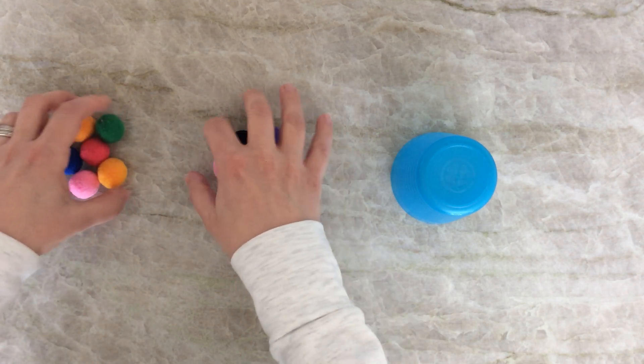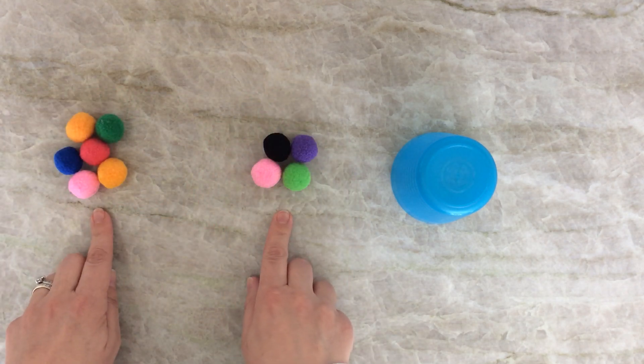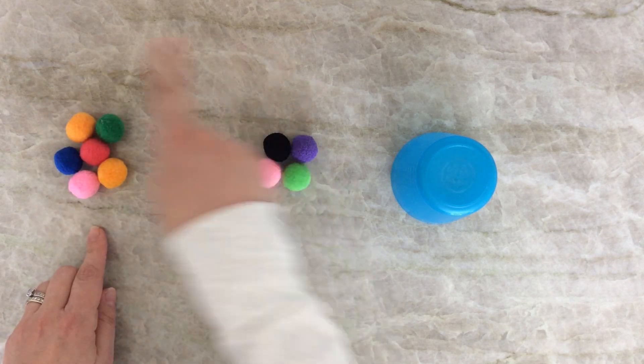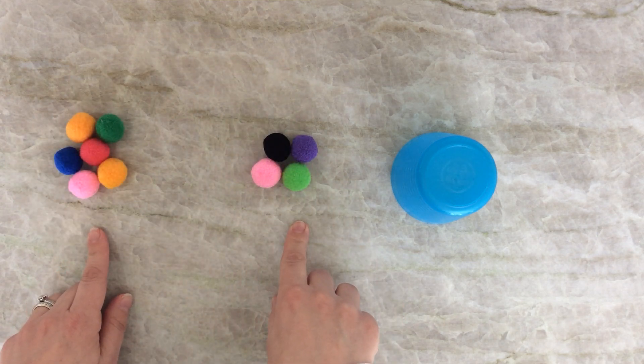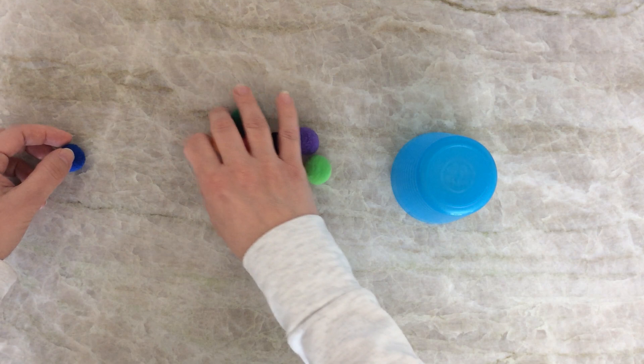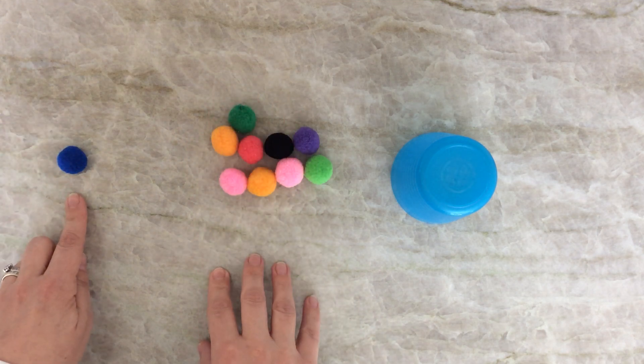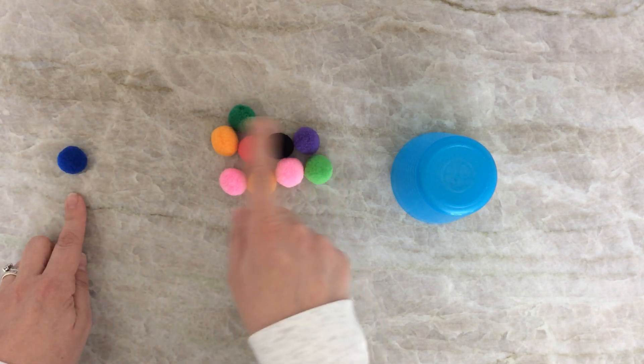What happens if I put some pom-poms here and some pom-poms there? How many do I have all together? I still have 10. What about if I move them all over here and I leave this one here? I still have 10.